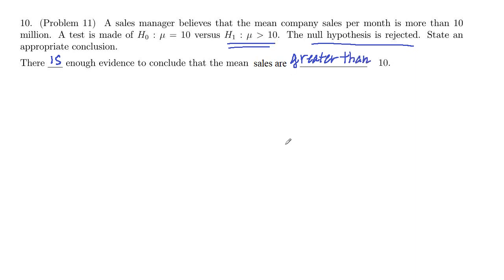Greater than 10. If we did not reject, we would say there is not enough evidence to conclude the mean sales are greater than 10. The second part stays the same — it's just: if you reject, there is enough evidence; if you don't reject, there is not enough evidence.